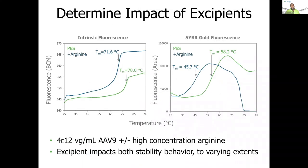Here's an example looking at the impact of excipients. These are AAVs measured both in PBS and in PBS with arginine. In this case, the addition of arginine actually works against you — the melting temperature decreases by about 6.4 degrees. The melting temperature as measured by SYBR Gold is also impacted quite significantly, with a difference of almost 13 degrees. This is a very nice way to assess the impact of your excipients as you are doing formulation development.